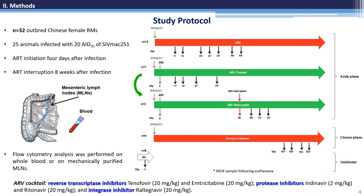To evaluate the effect of ART interruption, in a group of ART-treated animals we stopped the treatment 8 weeks after the initiation of the therapy. In addition, a group of SIV-infected animals without treatment in both acute and chronic stages of the disease was assessed to evaluate the normal evolution of the disease. Dedicated time-point samples from blood and mesenteric lymph nodes were collected and later analyzed by multi-parameter flow cytometry.